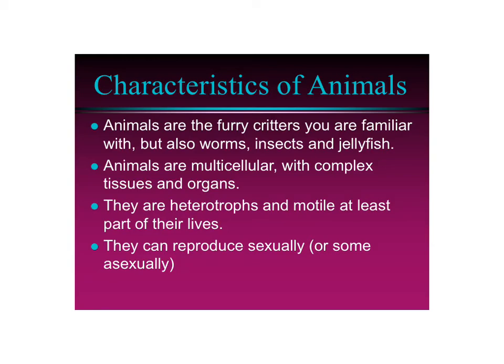They have cells that are brain cells, nerve cells, heart cells, blood cells — specialized cells. They are all also heterotrophs, which means they eat to get their energy. And they are motile, at least part of their lives. Motile means that they can move around from place to place — not just that they can move, but they can locomote.